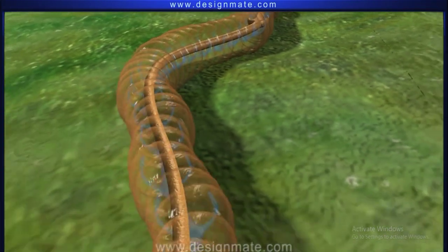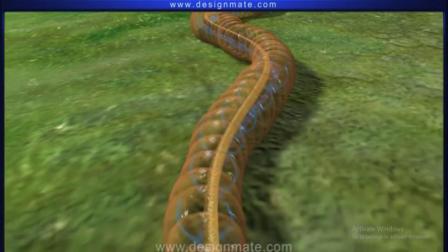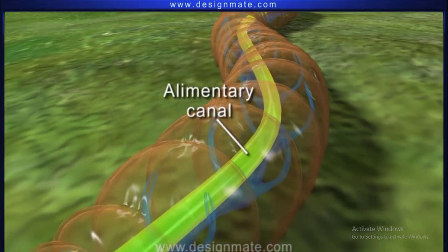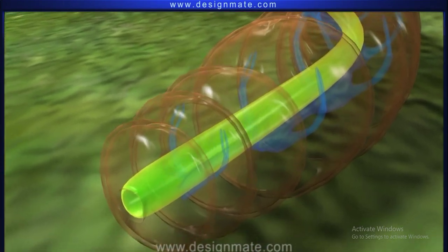The alimentary canal runs through the length of the body. The alimentary canal opens outside by a small circular aperture called anus.